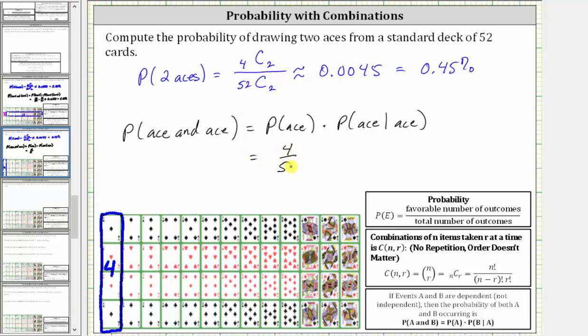Now we assume an ace has been drawn and it's not replaced. Let's assume this is the ace that was drawn first. So now notice how there are only three favorable outcomes to draw another ace out of a total of now 51 cards, not 52 cards.